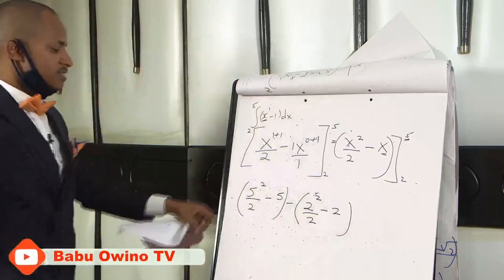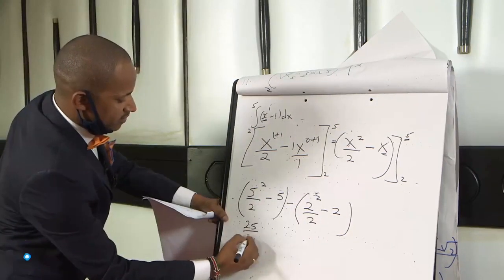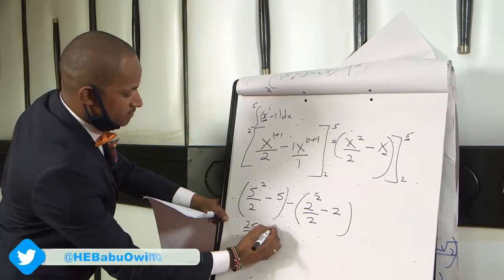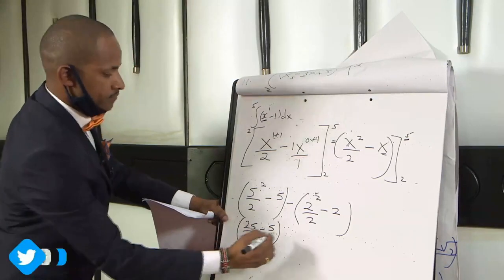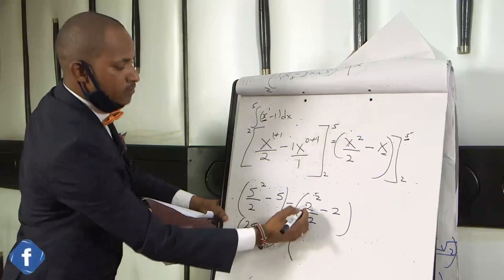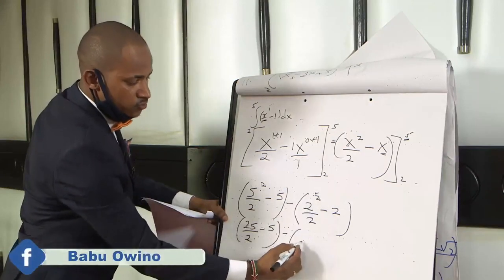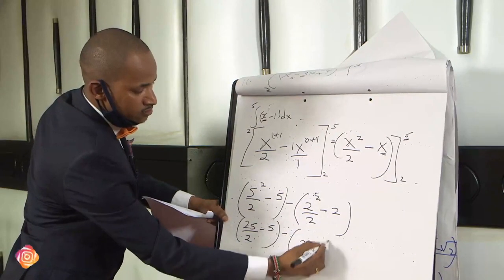You open this up. 5 squared is 25 from your calculator divided by 2 minus 5. Minus 2 squared is 4, 4 divided by 2 is 2, then minus 2.